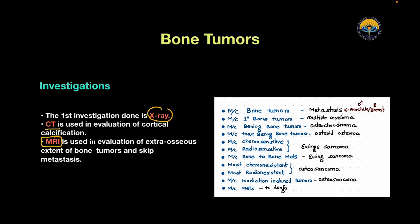For general knowledge: the most common bone tumor in our body is metastasis — in males from prostate, while in females from breast. The most common primary bone tumor is multiple myeloma, while the most common benign bone tumor is osteochondroma. The most common true benign bone tumor is osteoid osteoma. The most common chemosensitive and radiosensitive bone tumor is Ewing sarcoma.